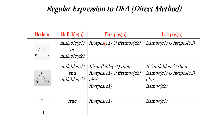Now let us see about the first position. The first position of the OR operator will be first position of C1 union first position of C2 — we can have either C1 or C2 in the first position. For the concatenation operator, by default the first position will be the first position of the left-hand side, that is first position of C1.